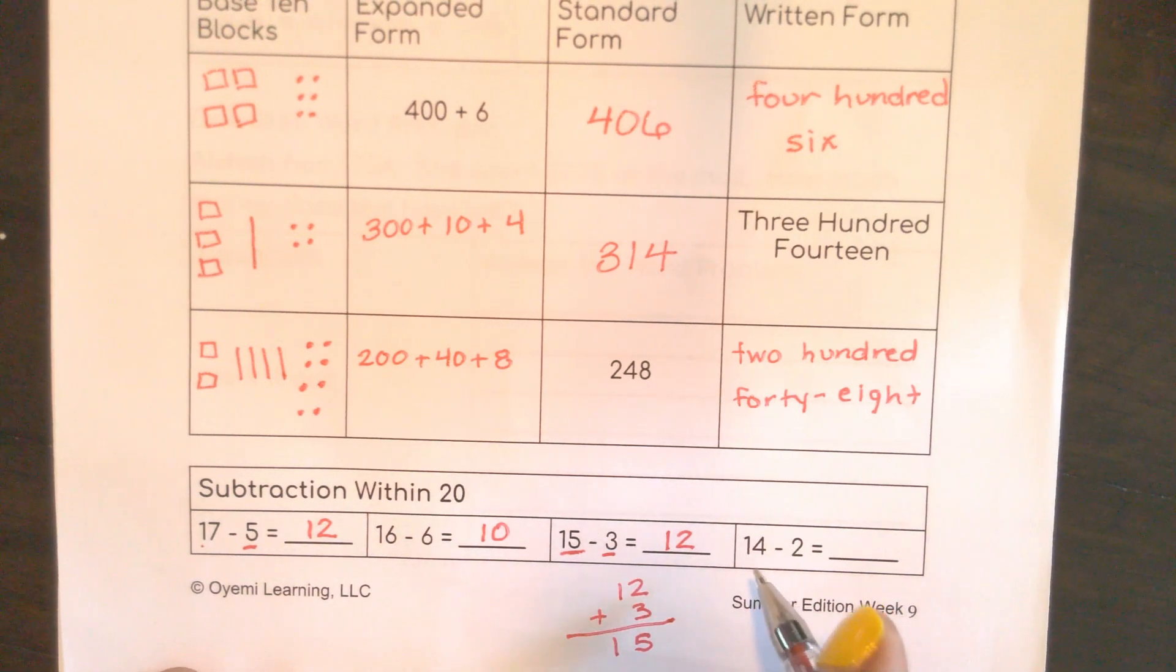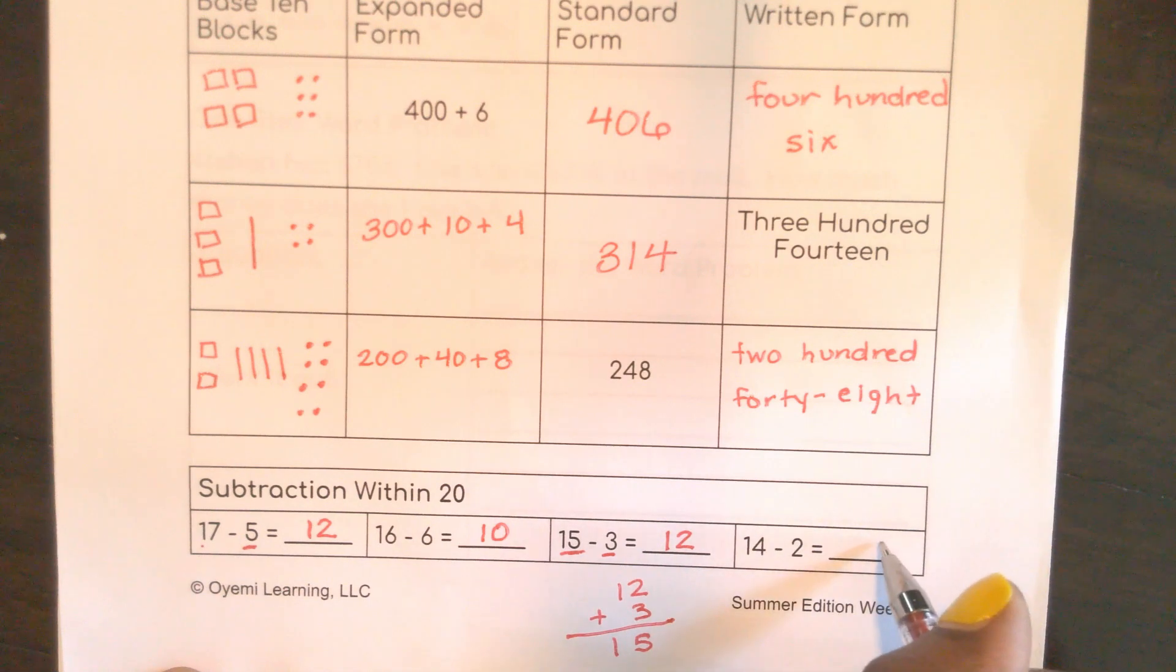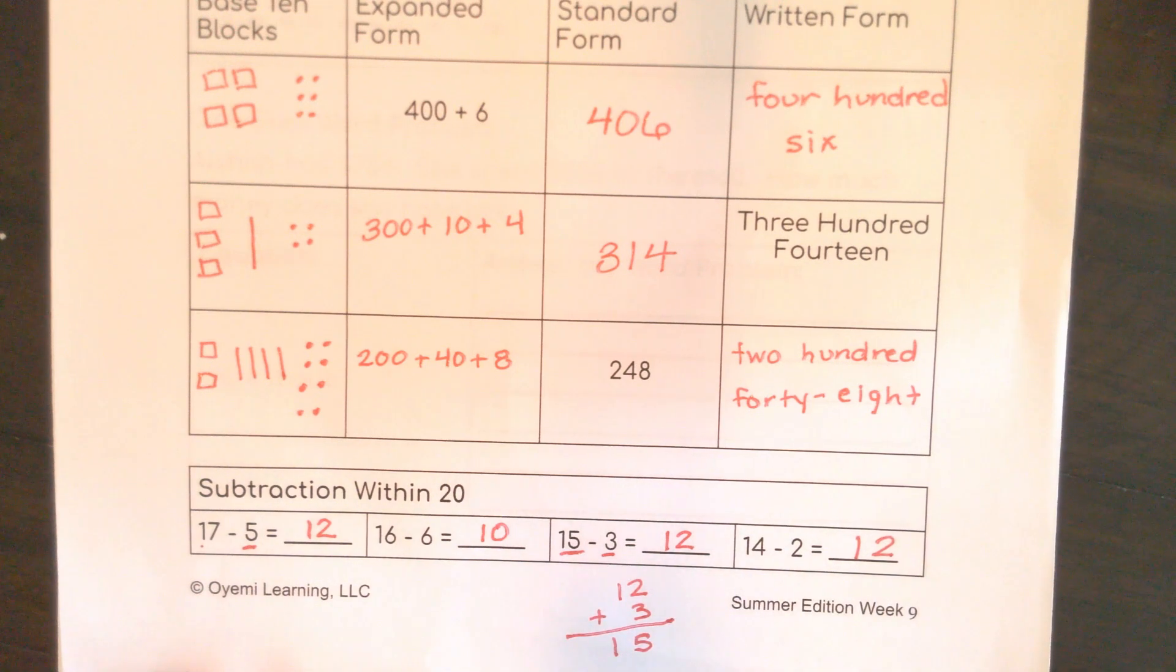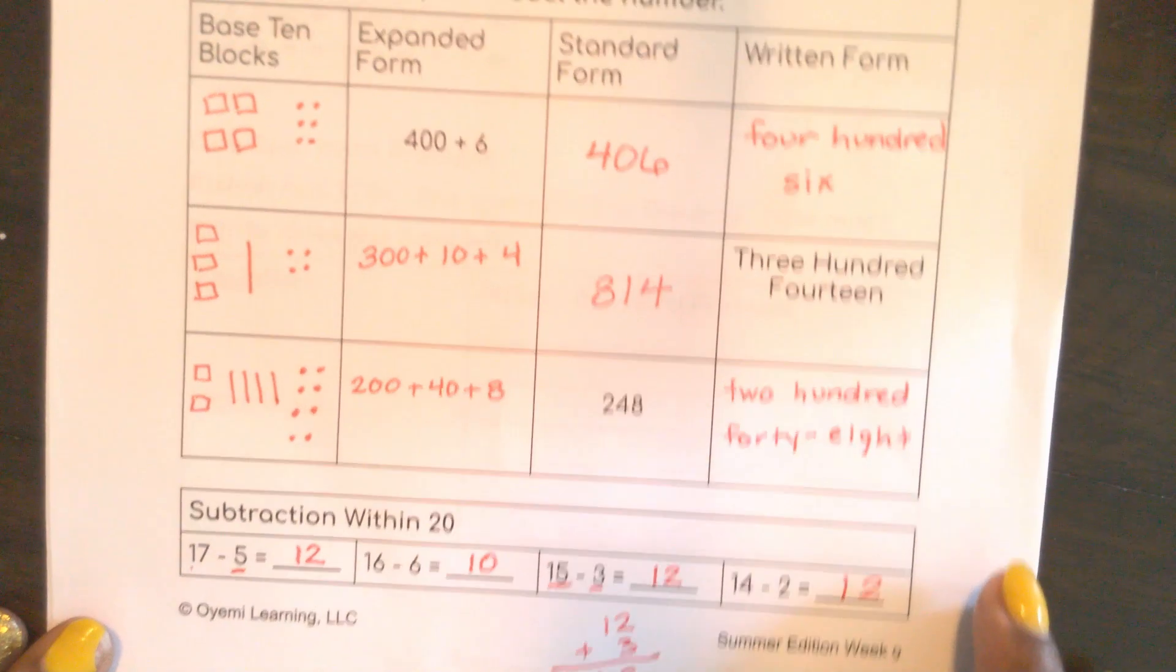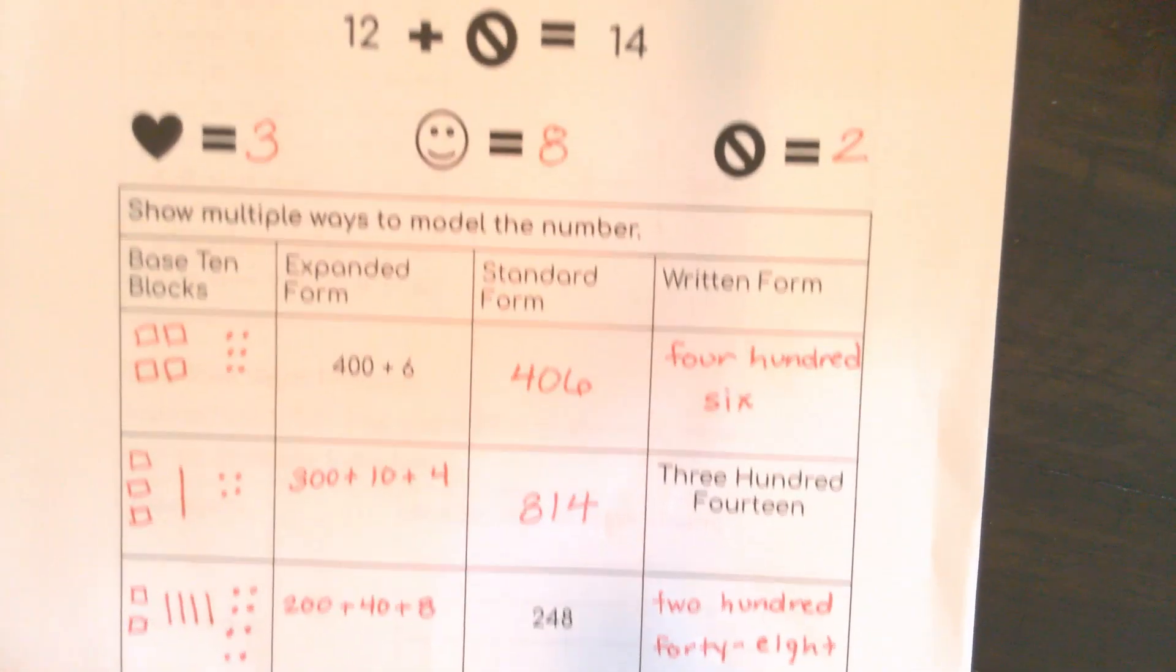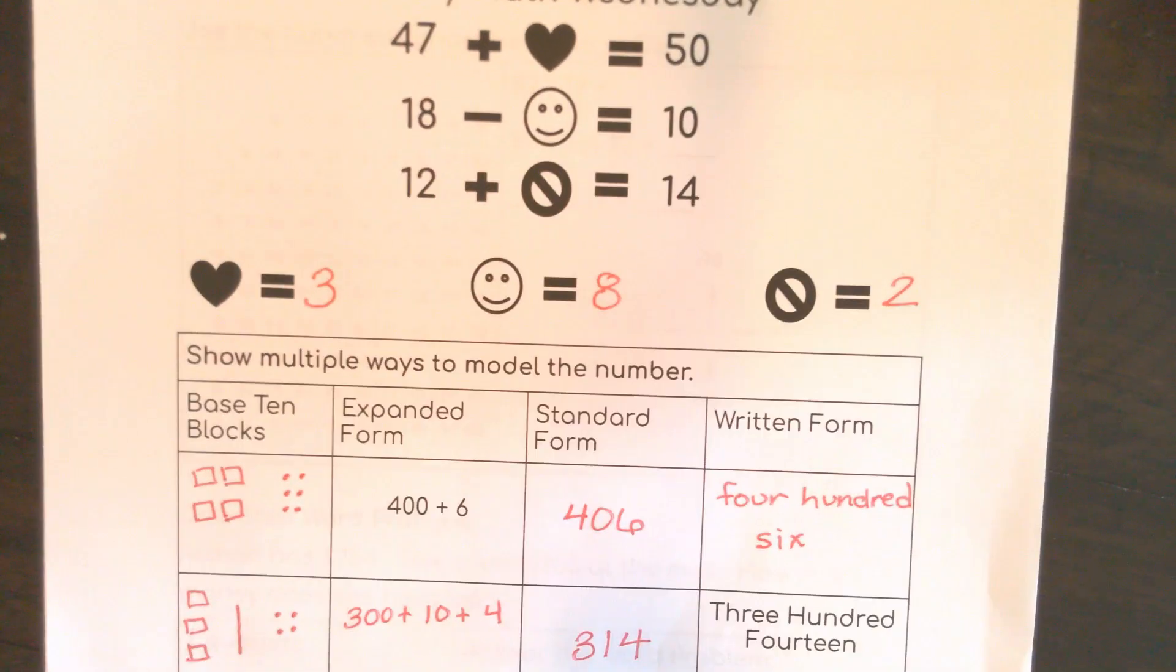So again here, 14 minus 2 is that 4 minus 2. I know that that would give me 2, and I still have that 10, which is going to give me 12. So I know 12 plus 2 is 14. 14 minus 2 is 12. 12 plus 2 is 14. Great number manipulation today. I hope that you're doing well, and I will see you soon.